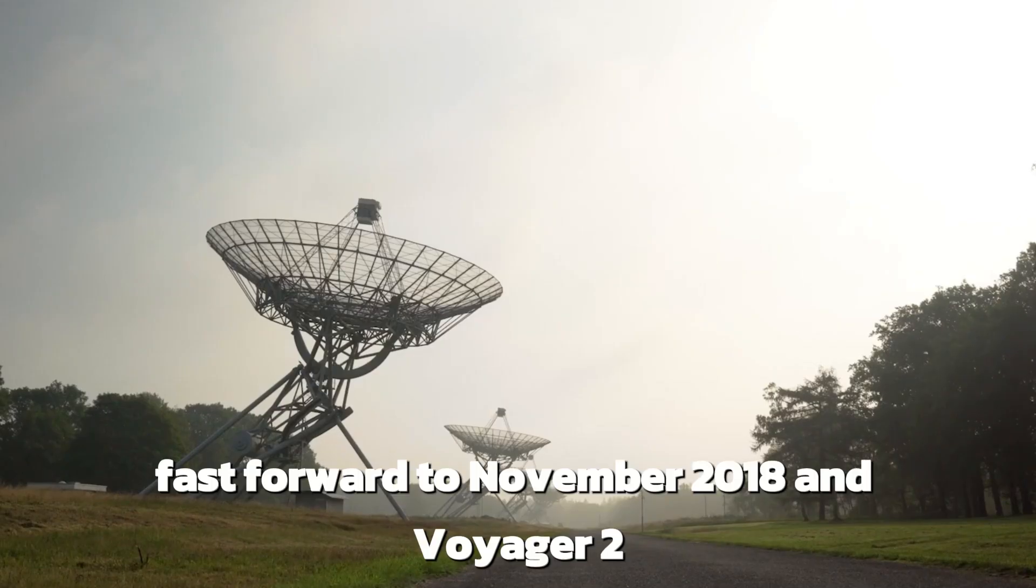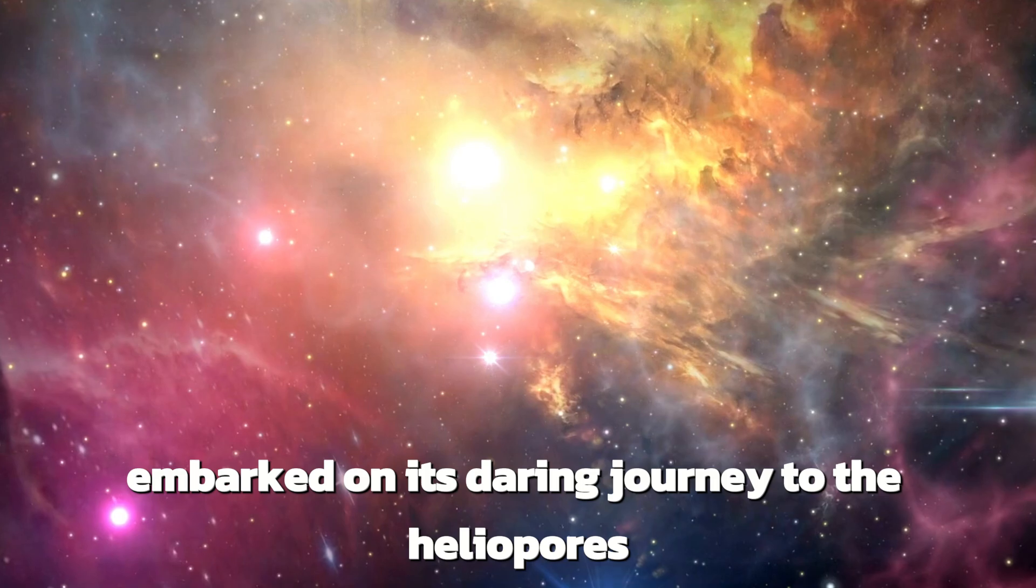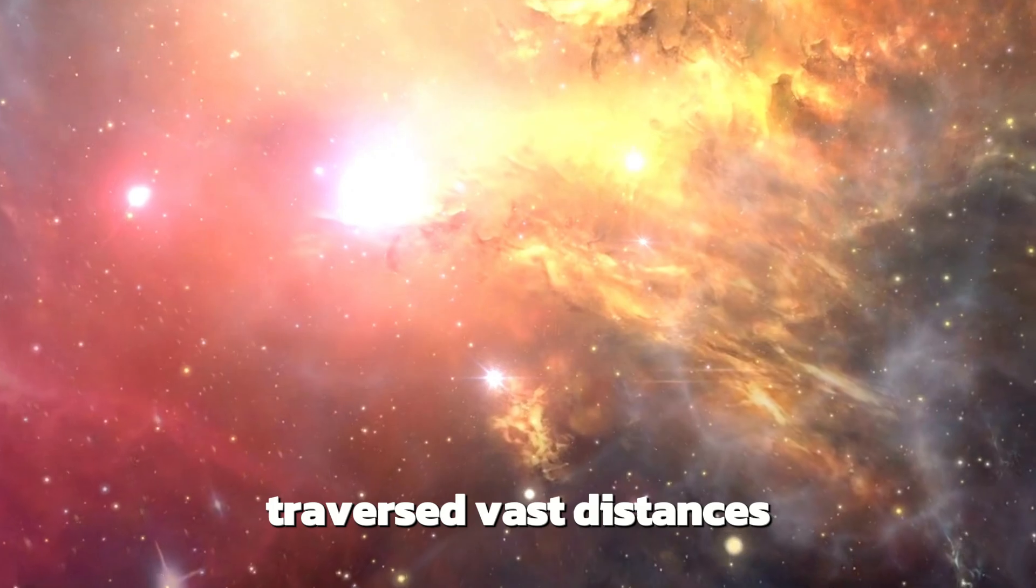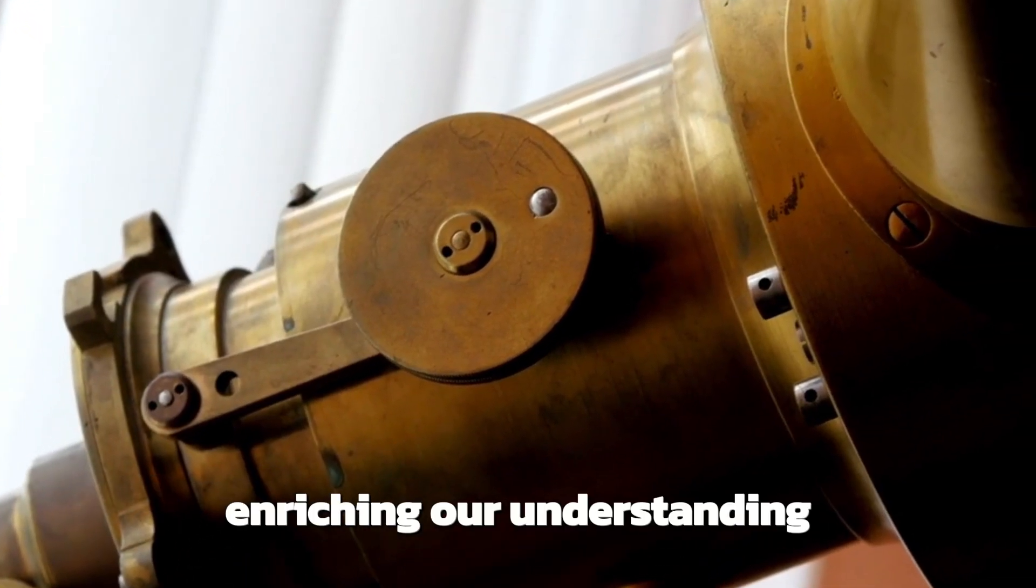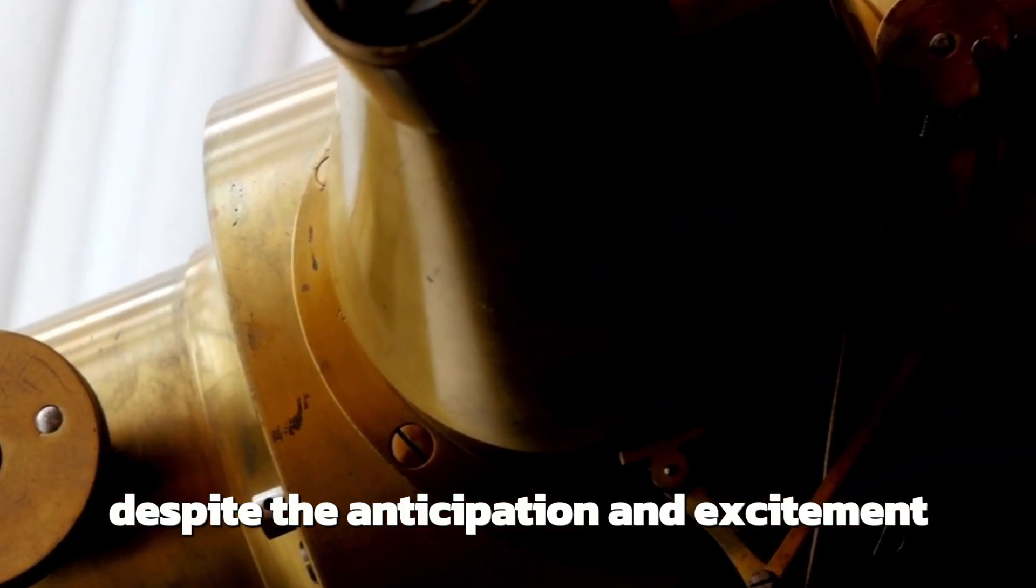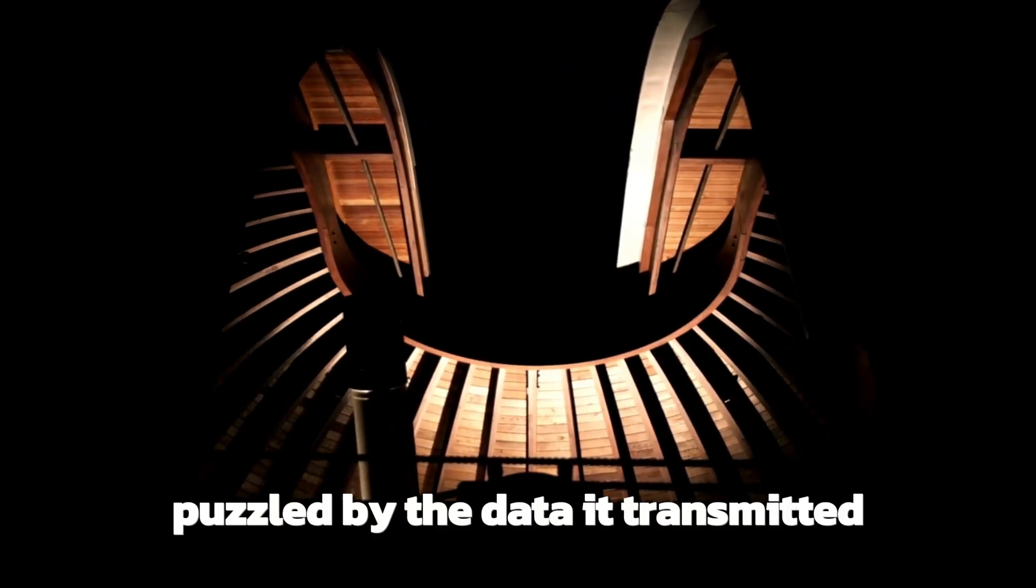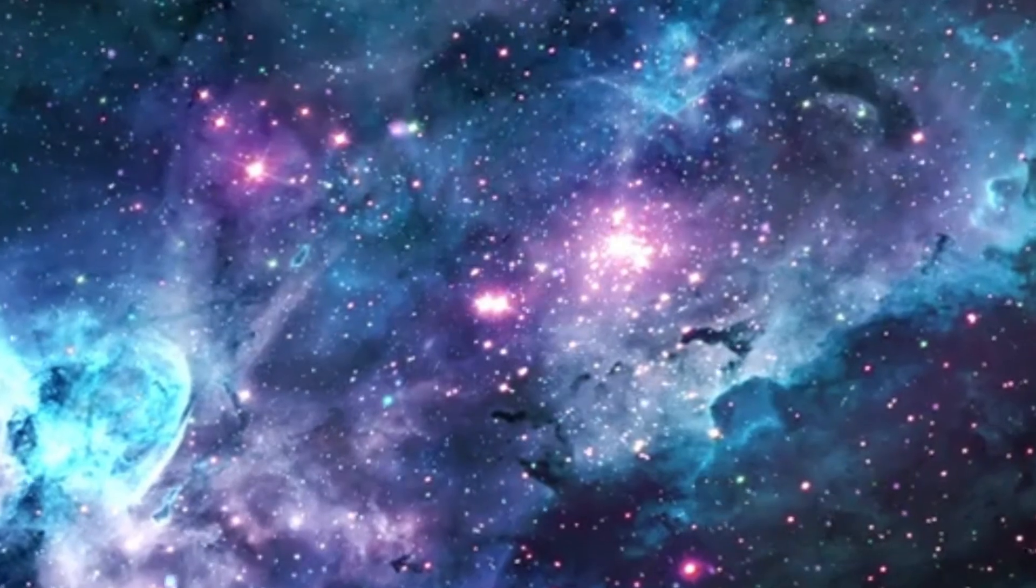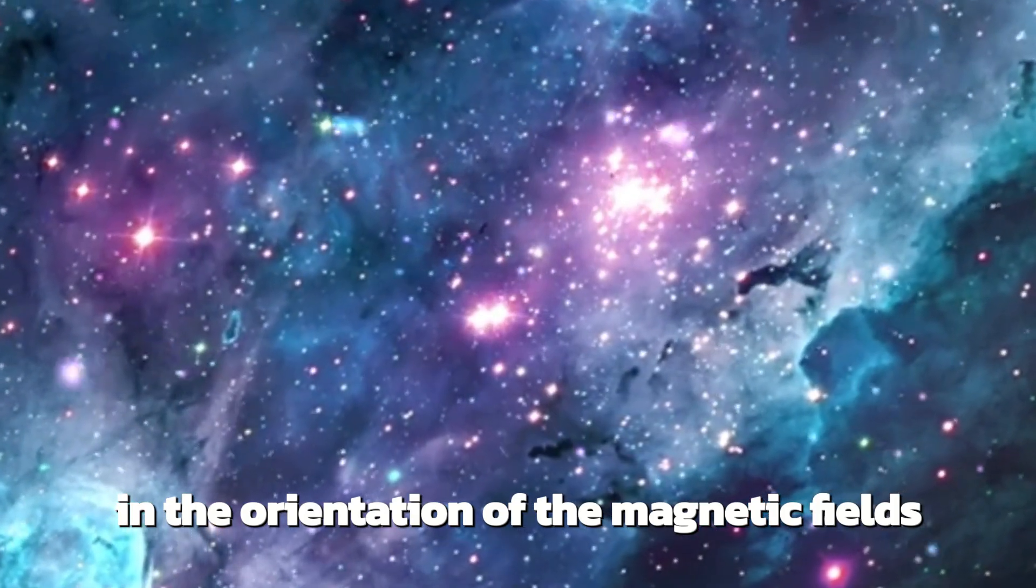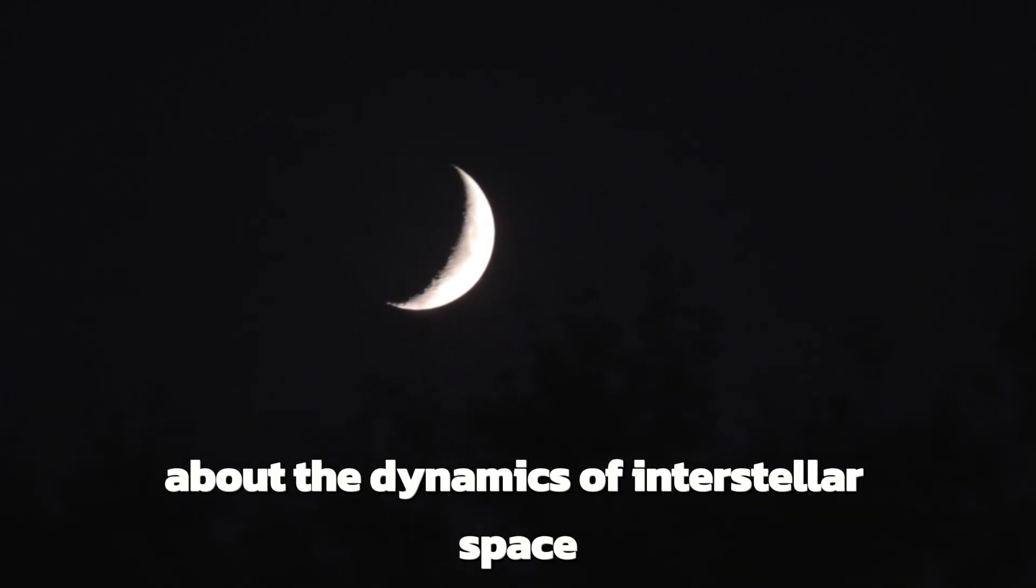Fast forward to November 2018, and Voyager 2, the twin spacecraft to Voyager 1, embarked on its daring journey to the heliopause. Like its predecessor, Voyager 2 traversed vast distances and transmitted invaluable data back to Earth, enriching our understanding of the outer boundaries of our solar system. Despite the anticipation and excitement surrounding Voyager 2's arrival at the heliopause, scientists were once again puzzled by the data it transmitted. Like Voyager 1, Voyager 2 detected no significant changes in the orientation of the magnetic fields, challenging existing theories and leaving researchers grappling with new questions about the dynamics of interstellar space.